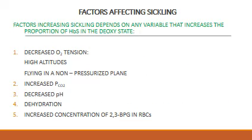What are the factors which affect sickling? Factors increasing sickling depend on any variable that increases the proportion of hemoglobin S in the deoxy state. If hemoglobin S is in the deoxygenated state, the sickling process would increase.